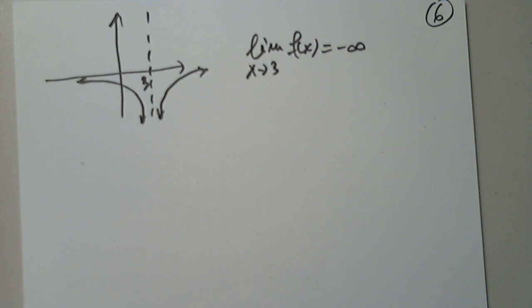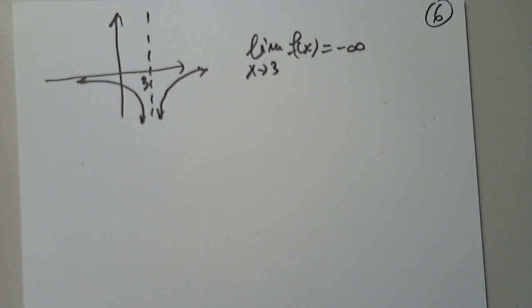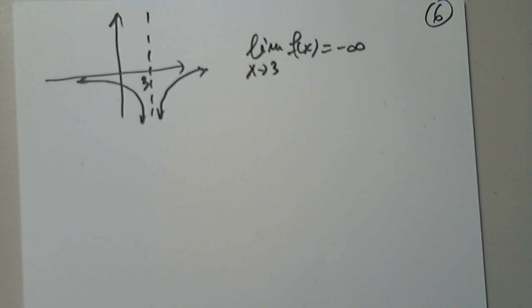We call it DNE. We say that the function is undefined when the value doesn't exist, but when the limits are different we say that the limit does not exist.